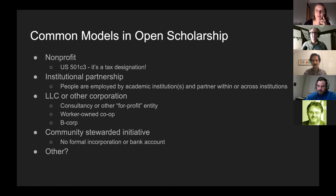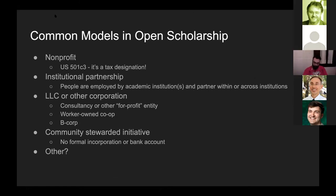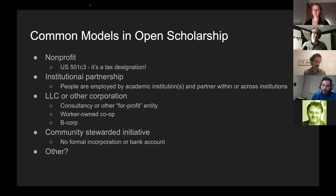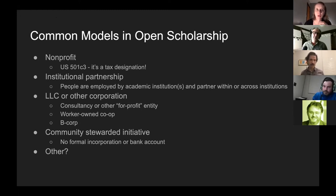This is Chris Shillam. I did some work earlier this year trying to come up with a similar taxonomy. One model I've seen a few times is what I'd call a coalition — a bunch of organizations that get together to work on something in common, maybe signing an MOU with some understanding of each entity's commitment. It's similar to a community-stewarded initiative but more formalized and involving organizations rather than individuals.